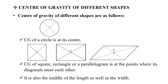First, we will talk about the circle — the center of gravity is at the center. For the square, rectangle, and parallelogram, the center of gravity is located at the intersection of the diagonals, at half the length and half the width.